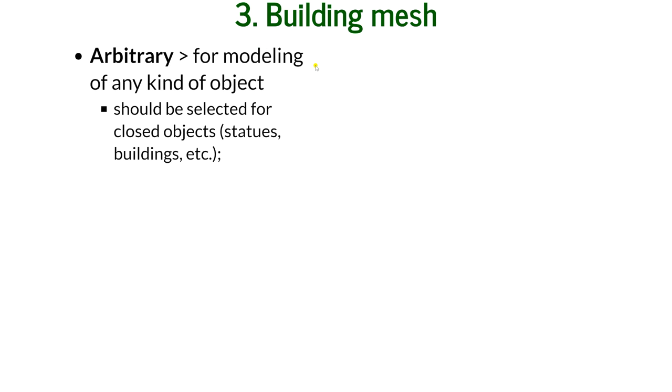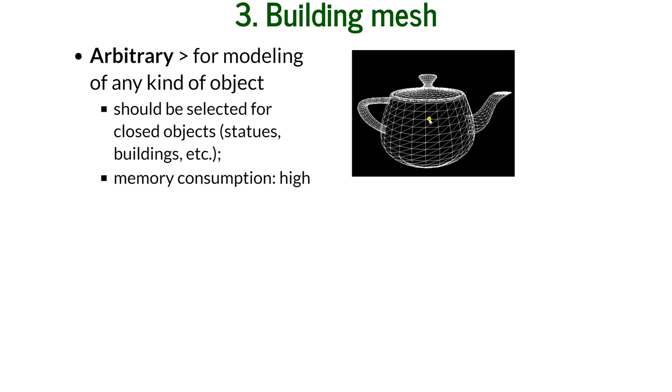The next step is necessary for building the 3D model: building mesh. Mesh connects the points that you created during dense point cloud generation and creates so-called faces. Faces are usually triangles, and you have two modes for that. Arbitrary is for any kind of object, so you create a full 3D mesh. You can see here what's underneath the object, but it has very high memory consumption.